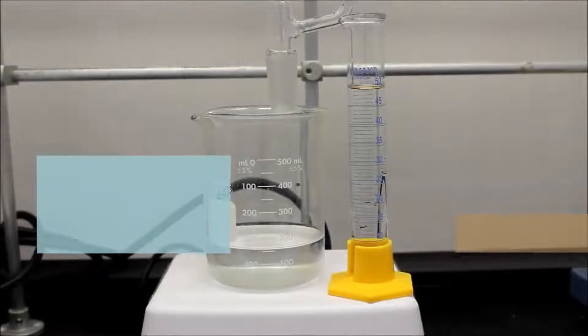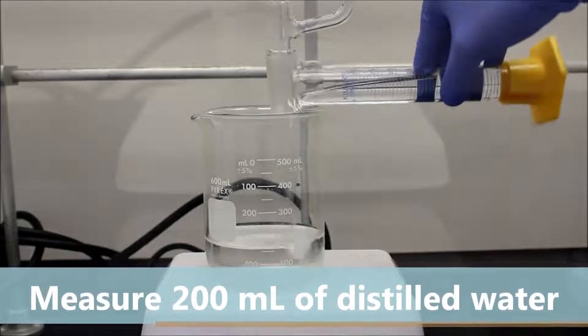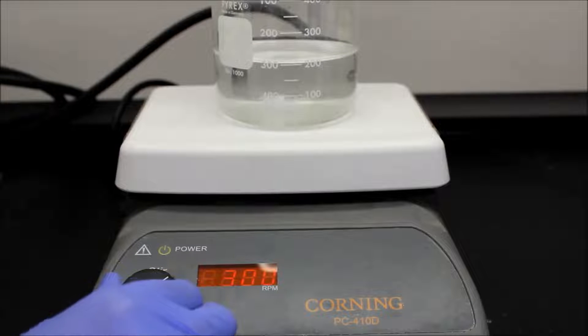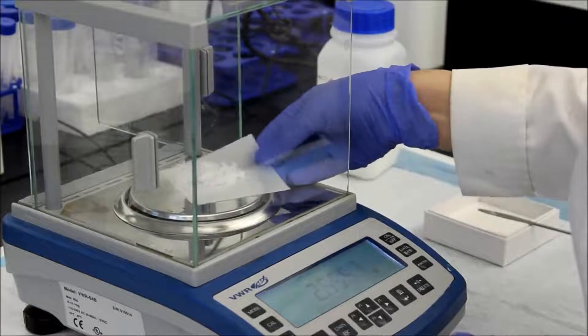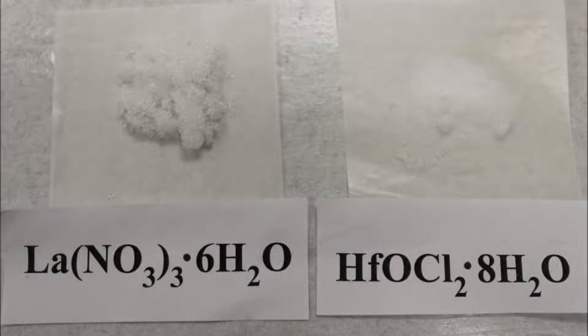First, begin by measuring 200 milliliters of distilled water in a 500 milliliter beaker and let it stir at 300 revolutions per minute. Measure 2.165 grams of lanthanum nitrate hexahydrate and 2.0476 grams of hafnium dichloride oxahydrate.